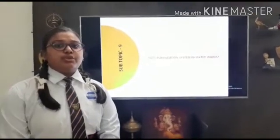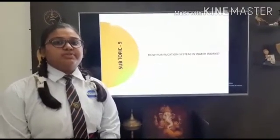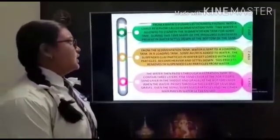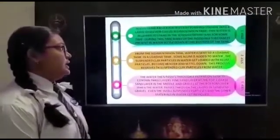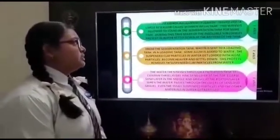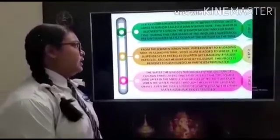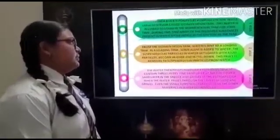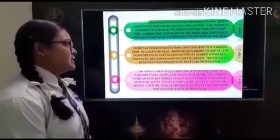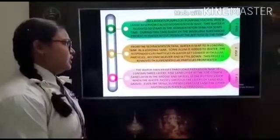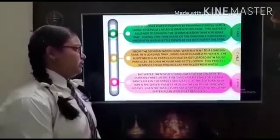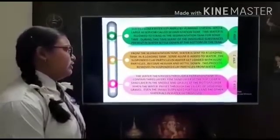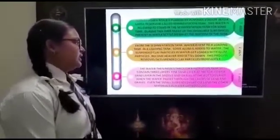Last but not the least, we should know how the water we use for various purposes is made suitable for us to use. Water from a reservoir is pumped by a pumping station into a large tank called a sedimentation tank. This water is allowed to stand so that insoluble substances settle at the bottom. From the sedimentation tank, water is sent to a loading tank where alum is added. The suspended clay particles get coated with alum particles, become heavier and settle down, removing suspended clay from the water. The water then passes through a filtration tank containing three layers: fine sand at the top, coarse sand in the middle, and gravel at the bottom, which removes remaining insoluble suspended particles.